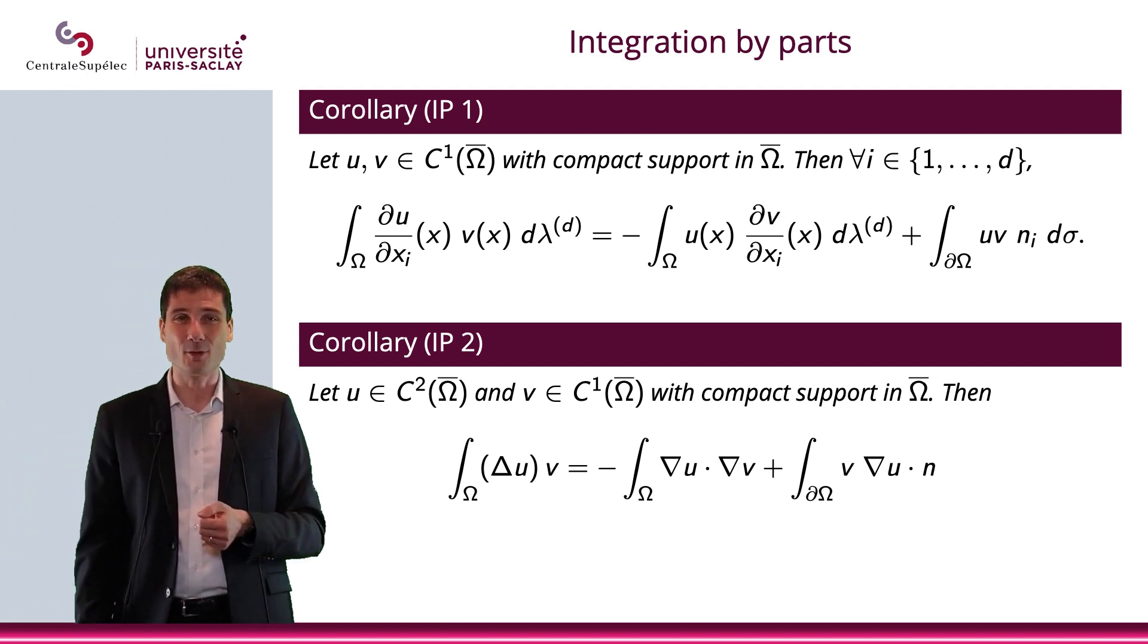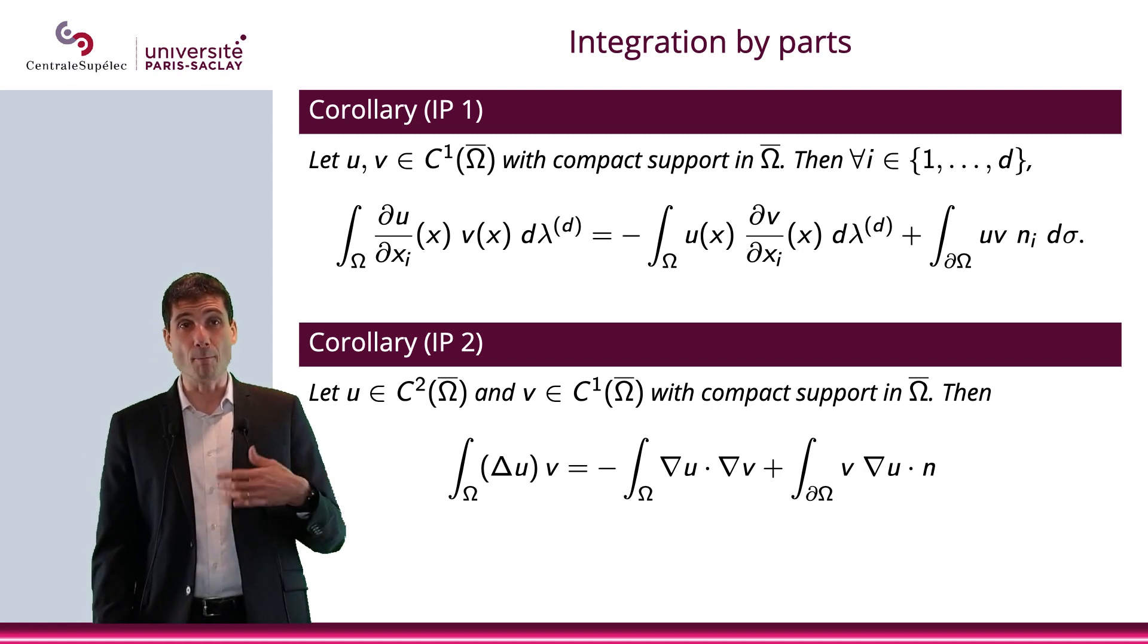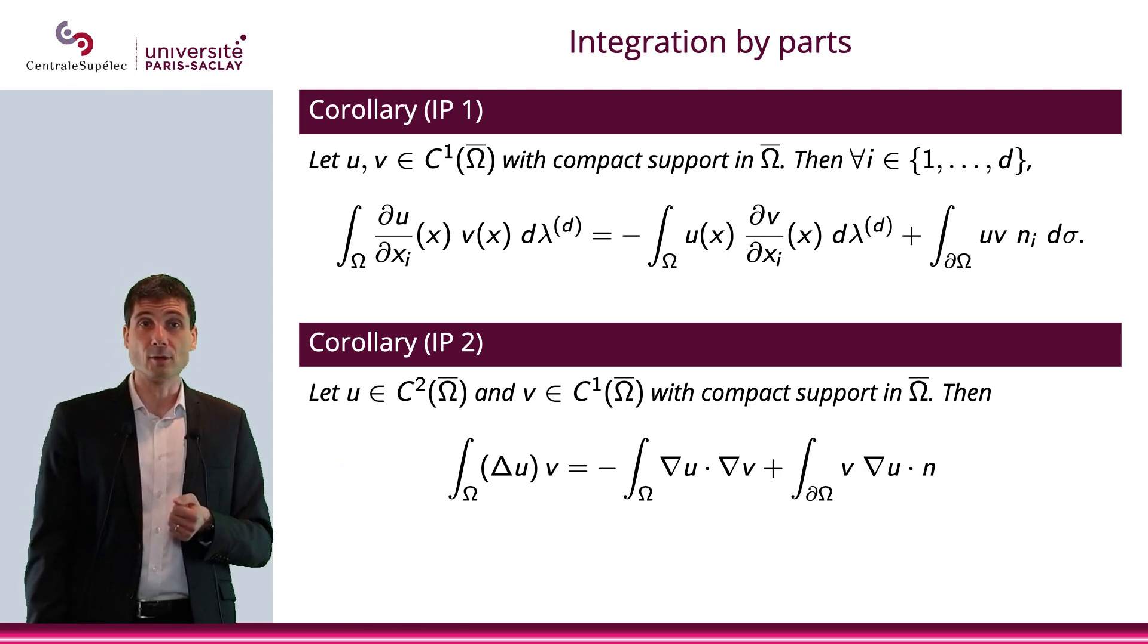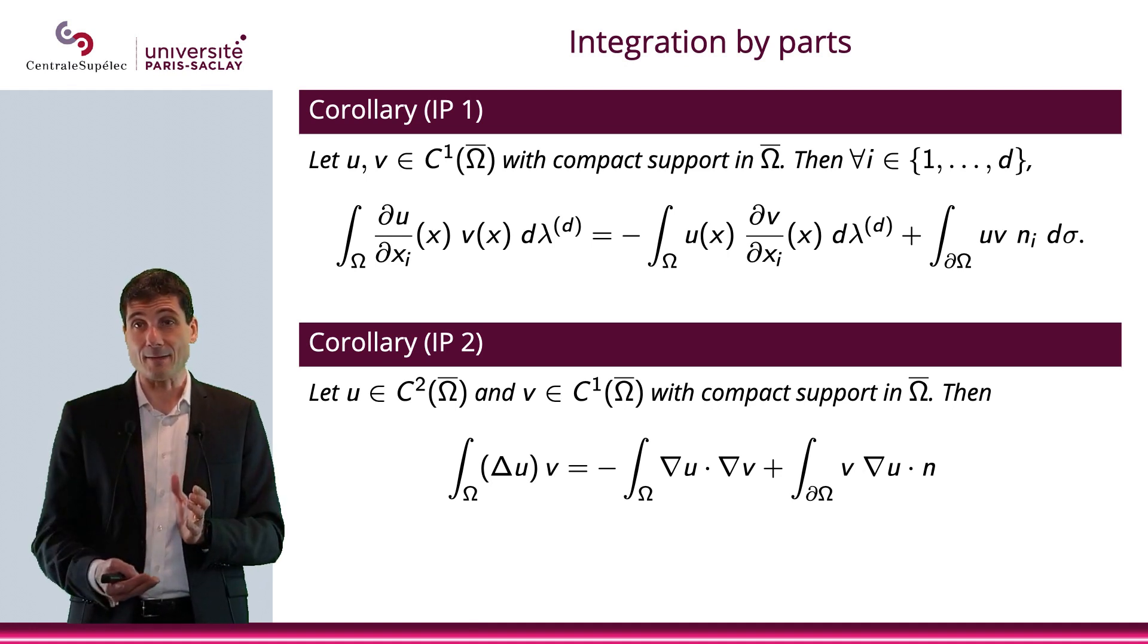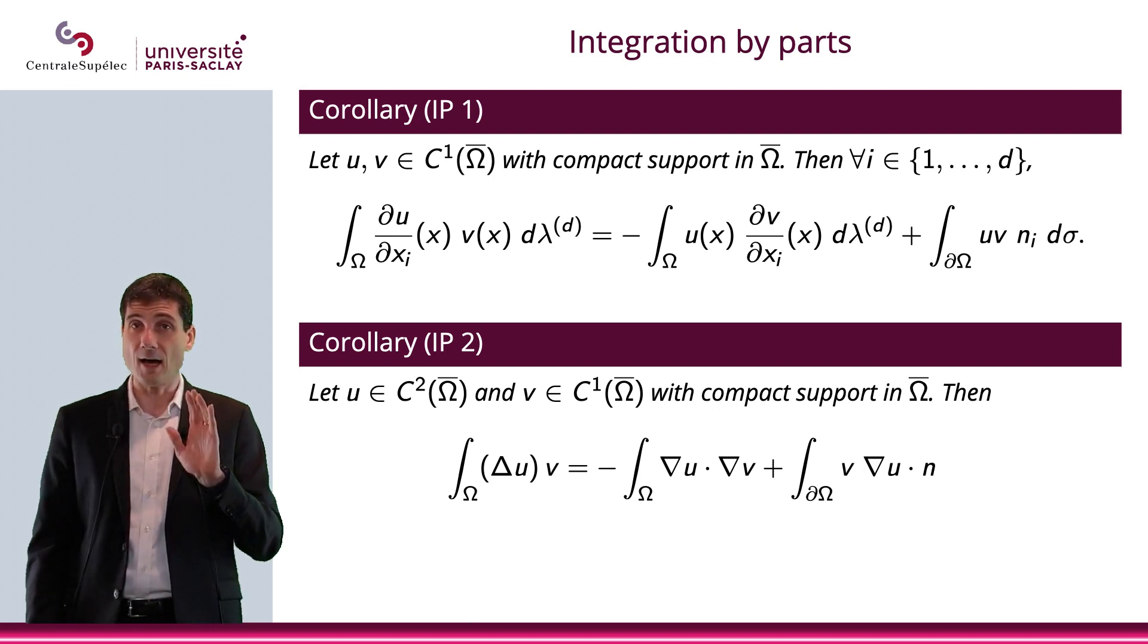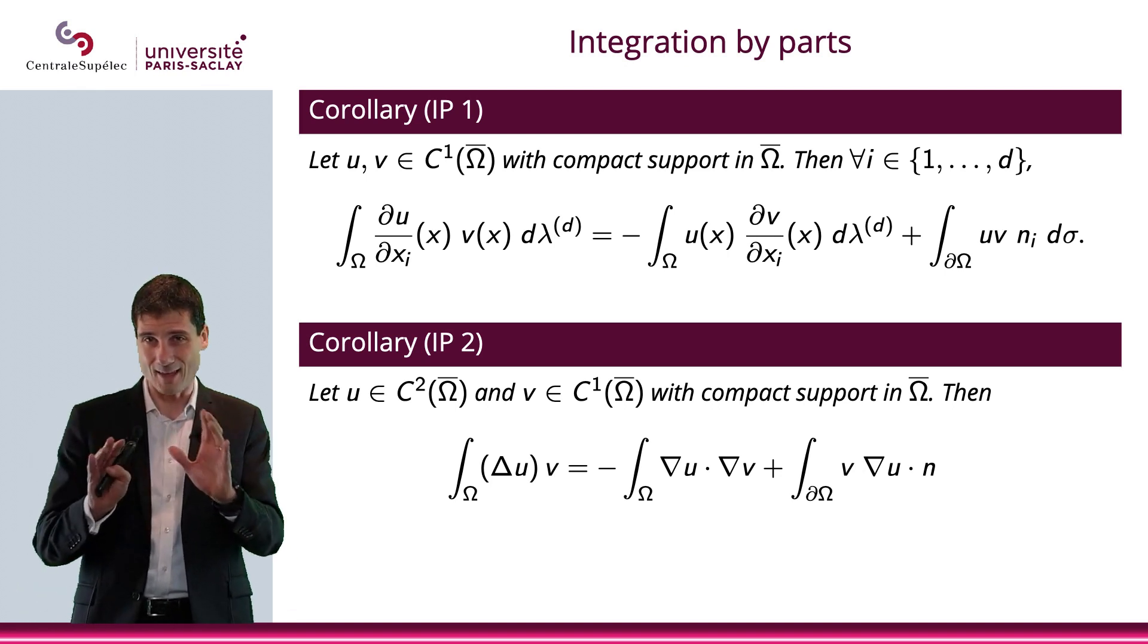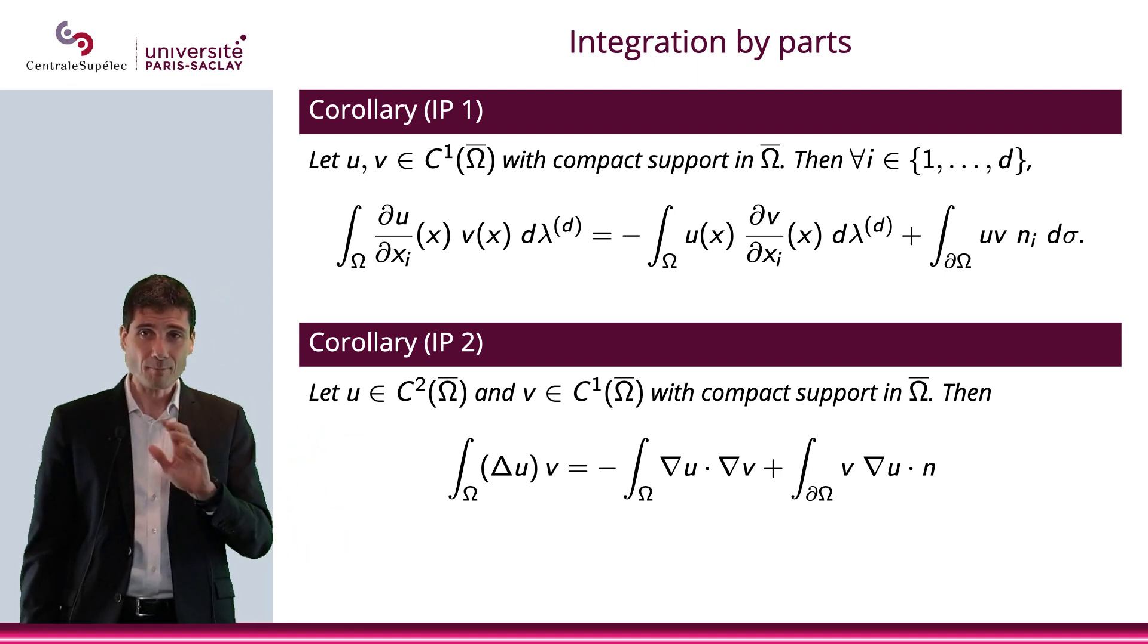Here is corollary IP2. Then I'm writing that the integral of the Laplace operator applied to u, v, is equal to minus the integral of Ω ∇u scalar product ∇v, plus the integral over the boundary of v gradient of u · n. And by the way, that we will use in chapter four at some point when we are doing the variational formulation. So, coming up chapter four, you'll remember that IP2, that's going to become useful.